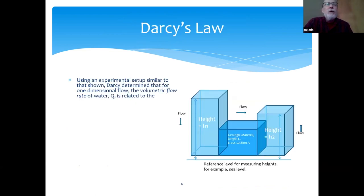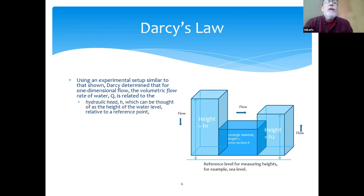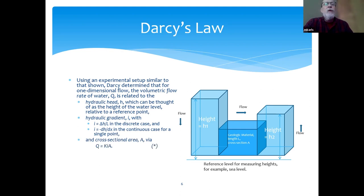So Darcy used an experimental setup similar to the one I've shown here. He determined that for one-dimensional flow, the volumetric flow rate of water Q is related to the hydraulic head h, which you can think of as the height of the water level relative to a reference point, the hydraulic gradient I, where I is equal to the change in head level between the two points we're measuring divided by how far apart these points are in the discrete case, or it's equal to the derivative with respect to position with a minus on the front in the continuous case for a single point, and the cross-sectional area a, by means of Q equals K times I times A, where K is a proportionality constant called hydraulic conductivity that depends on the geologic material through which the water is flowing.